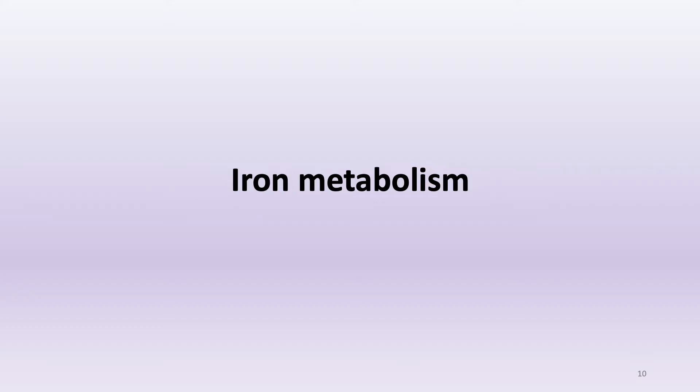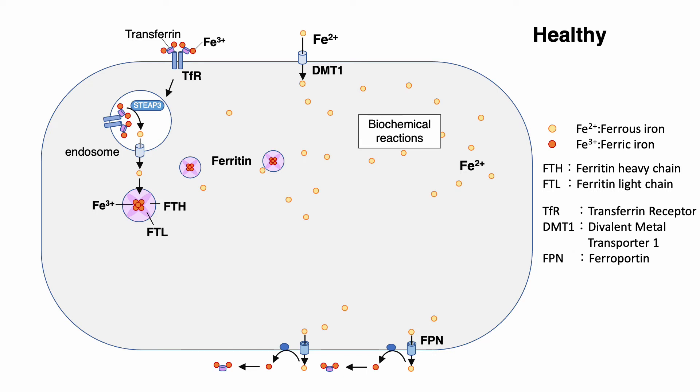Next, I will talk about iron metabolism. Iron exists as both ferrous iron and ferric iron. Ferrous iron is used in many biochemical reactions. However, excess amounts of ferrous iron produce reactive oxygen species via the Fenton reaction, which leads to cytotoxicity. Therefore, iron availability is tightly regulated within cells. Transferrin receptor and DMT1 are responsible for iron uptake, while ferroportin is responsible for iron export. In general, iron is stored in ferritin as ferric iron, which is a non-redox form, and when iron demand increases, ferritin is degraded by autophagy.